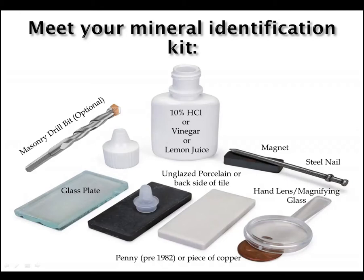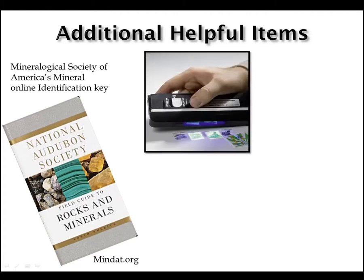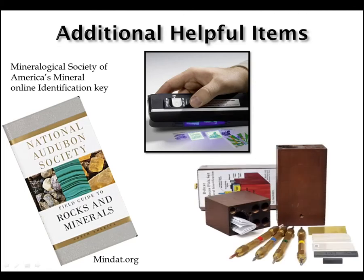Unglazed porcelain can be hard to find, but the backside of a glazed piece of tile will work. As for the penny, it needs to be pre-1982 because starting in 1983 pennies were made mostly of zinc and only have a copper coating. You will also need a reference guide for actually identifying the minerals. I recommend the National Audubon Society's Rocks and Minerals Identification Guide. We will also be looking at some very helpful websites that are free to use later in this video. A black light with short wave and long wave capabilities is handy but not necessary. And if you want to be more precise on your hardness test, the Deluxe Hardness Pick Set for Mineral Identification is really handy, but not cheap.